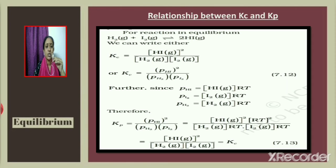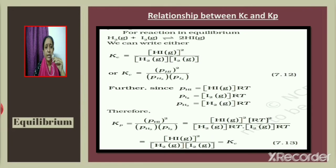Substituting into Kp = P(HI)² / P(H₂)·P(I₂): Kp = [HI]²·(RT)² / [H₂]·RT·[I₂]·RT. The (RT)² terms cancel in numerator and denominator, giving Kp = [HI]² / [H₂][I₂] = Kc. Thus for H₂ + I₂ ⇌ 2HI, Kp = Kc.